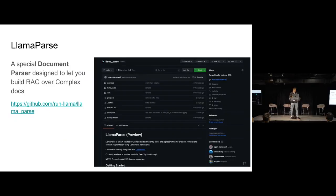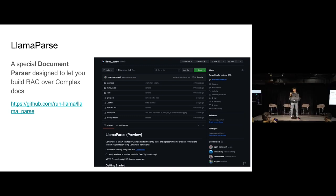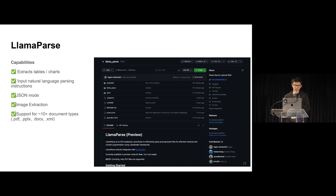So one of the things that we built at LlamaIndex is LlamaParse, which is a special document parser designed to let you build RAG over complex docs. Of course, there's other players working on this problem as well. And I think the overall motivation of a lot of these projects is to really take in unstructured data that can be very complex and somehow structure it in the right way so that LLMs can understand it. Some of the core capabilities of LlamaParse include being able to properly extract out and format tables and charts, input natural language parsing instructions, extract out images so you can build multimodal RAG, and also support a bunch of different document types that are common today. PDFs, PowerPoints, .x files, HTML, and more.